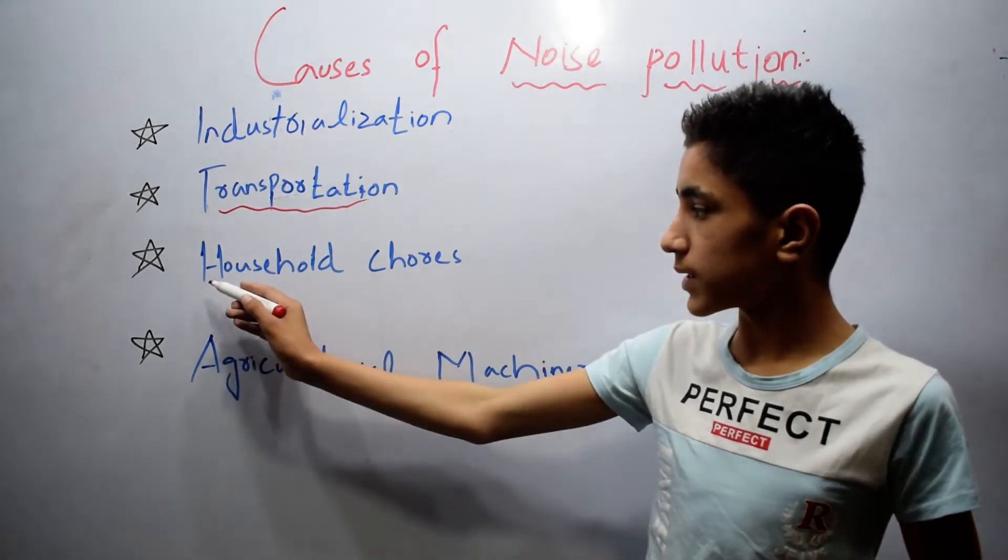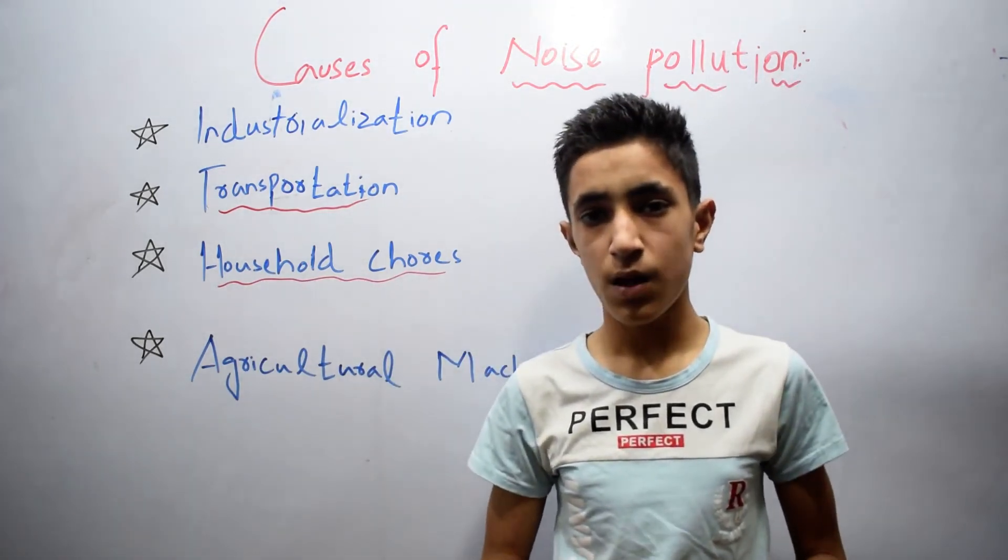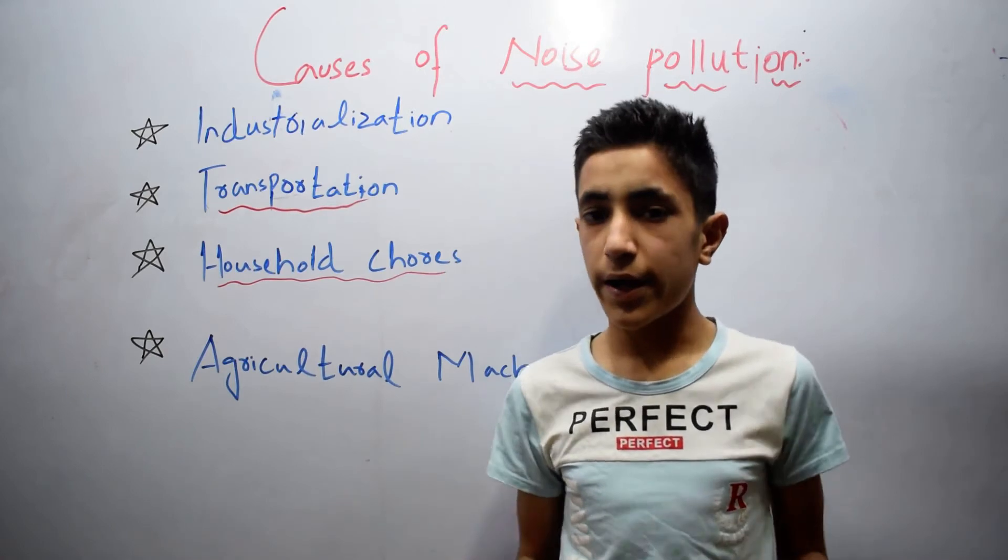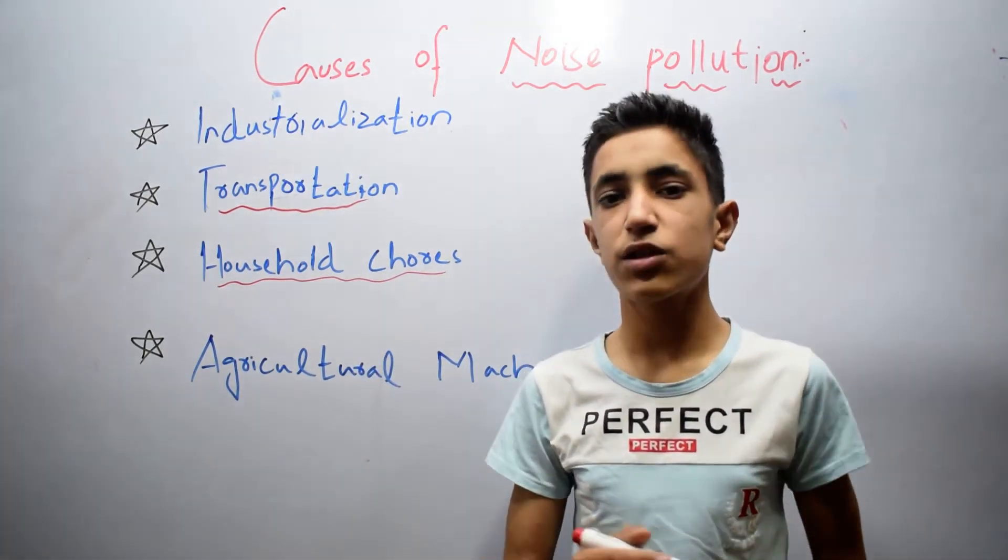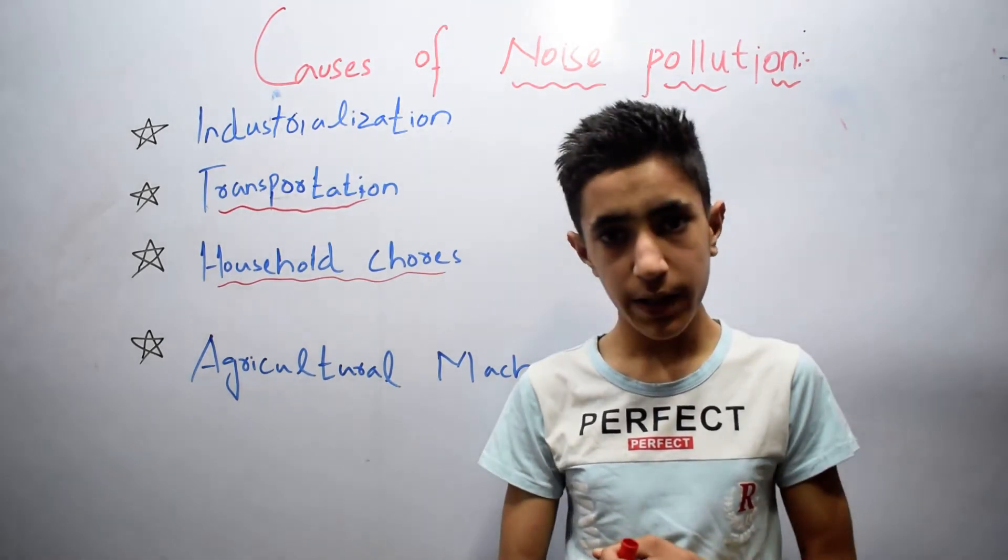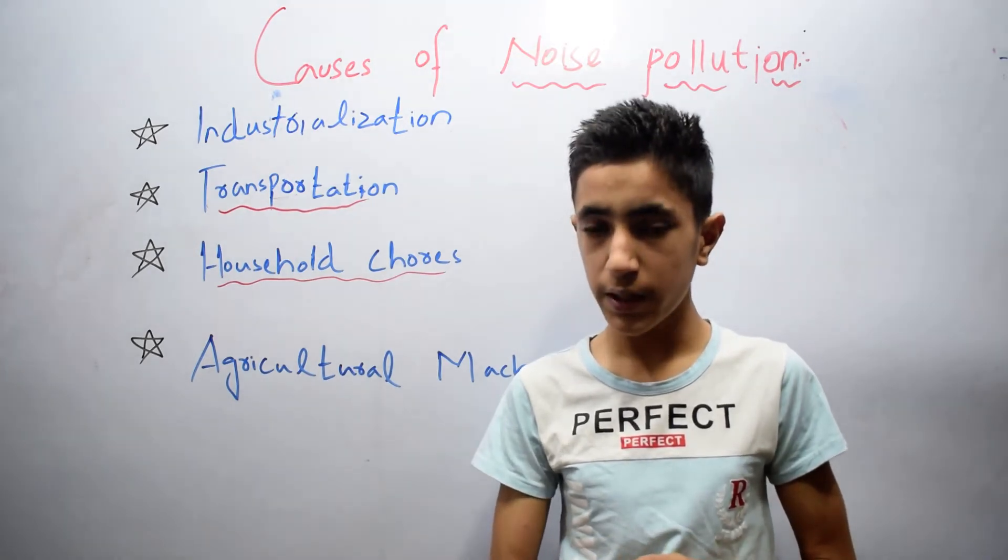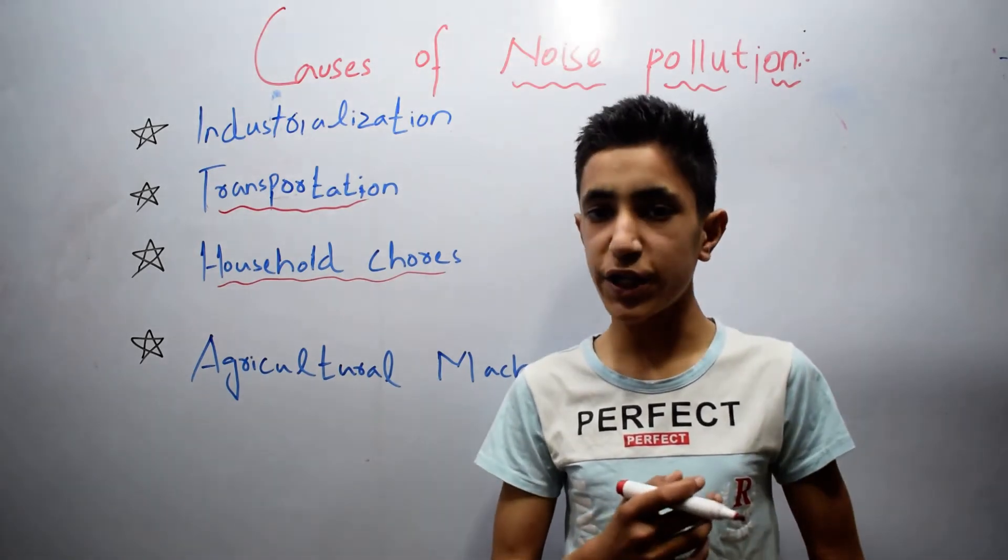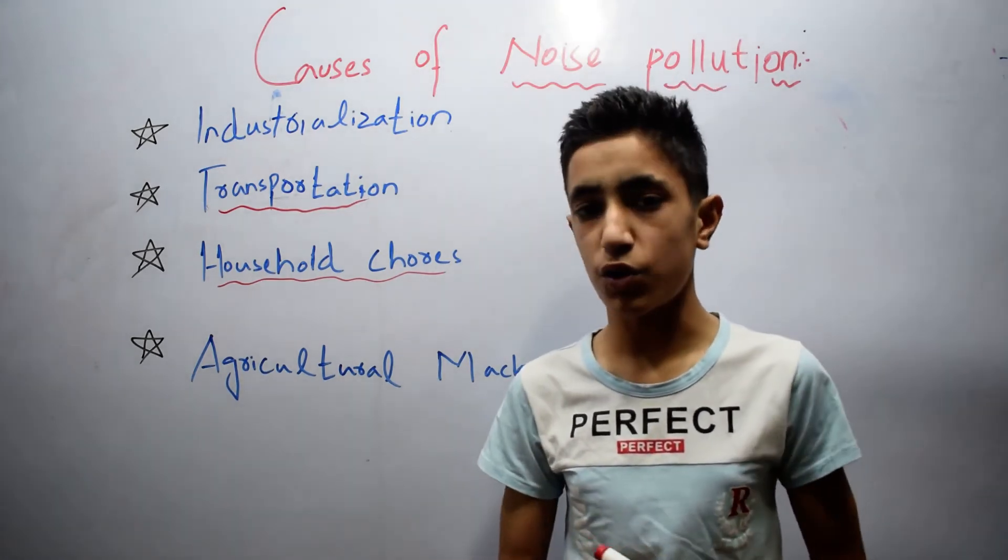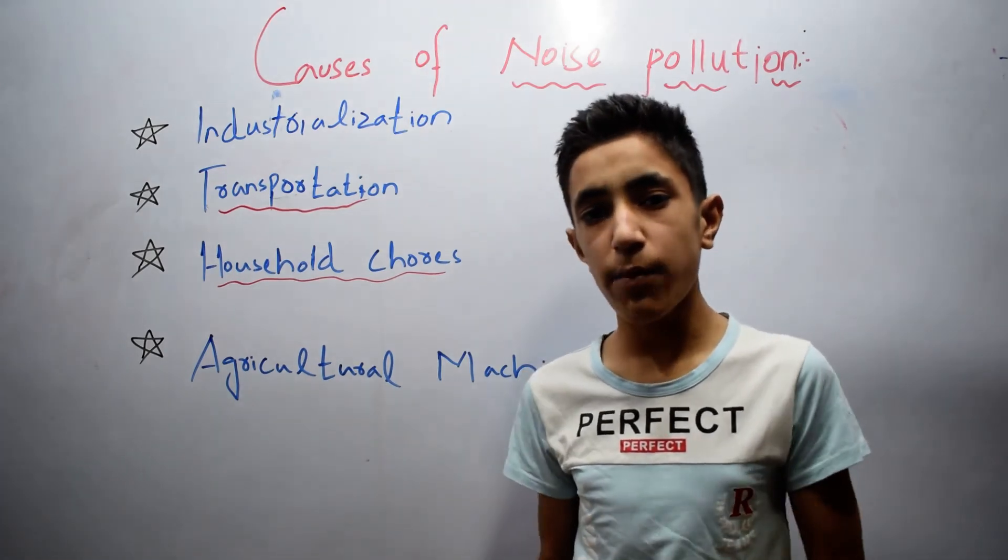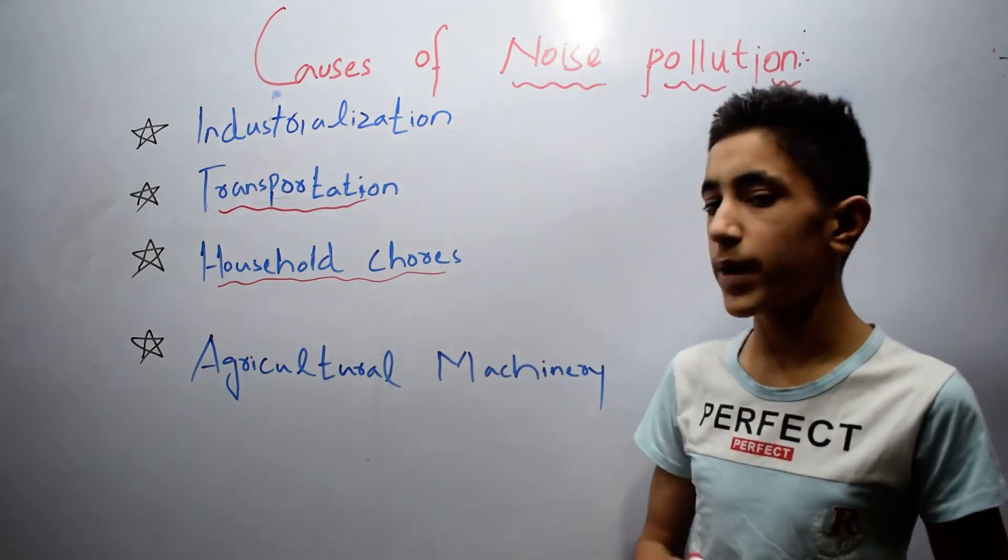The third cause of noise pollution is household chores. In household chores, people use some gadgets like TV, mobile, cooler, loudspeaker, and air conditioner. These gadgets produce sound and it disturbs the neighborhood life in a bad way. This was the third cause of noise pollution.